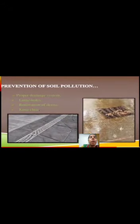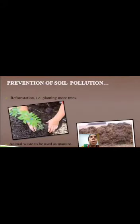How to prevent soil pollution: proper drainage system, renovation of drains, keeping drains clear. Reforestation — planting more trees. Animal waste to be used as manure.